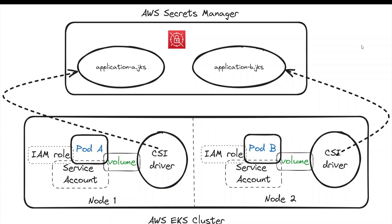In my previous video I talked about integrating a Spring Boot application with AWS Secrets Manager. However, that method works for text or JSON-based key-value pair properties. But there are situations where the application needs binary secrets like certificates, JKS files, or .p12 files.